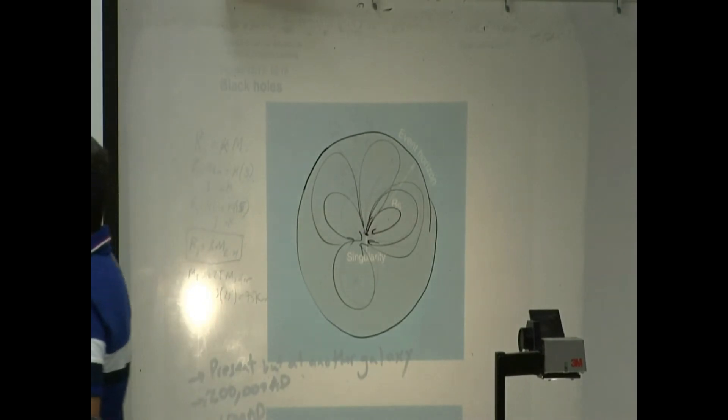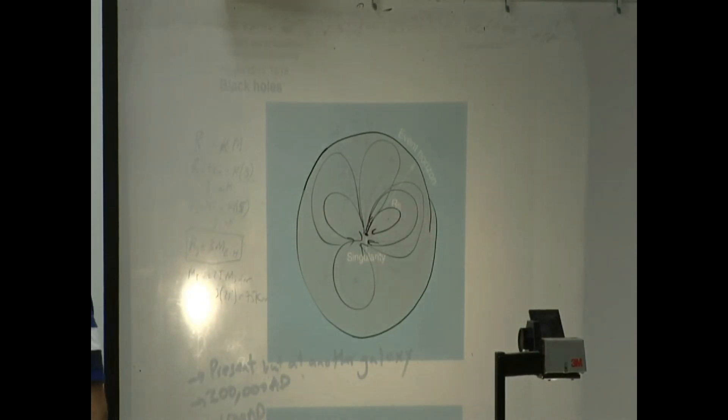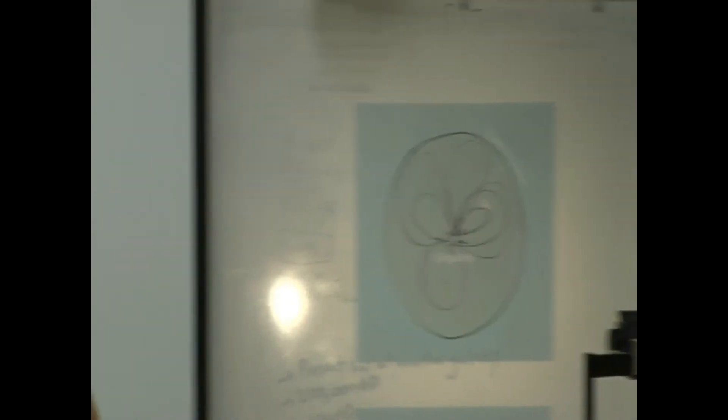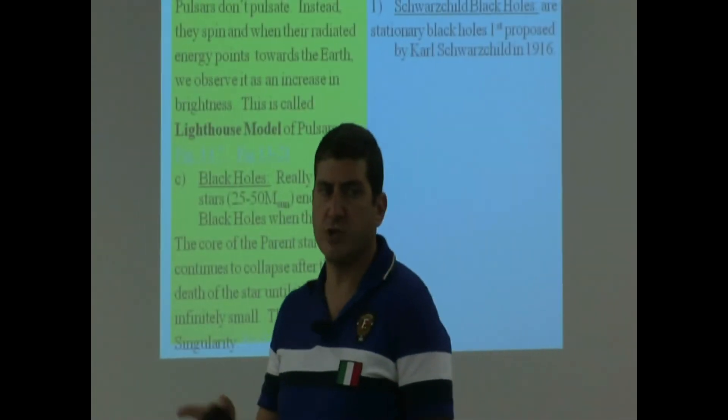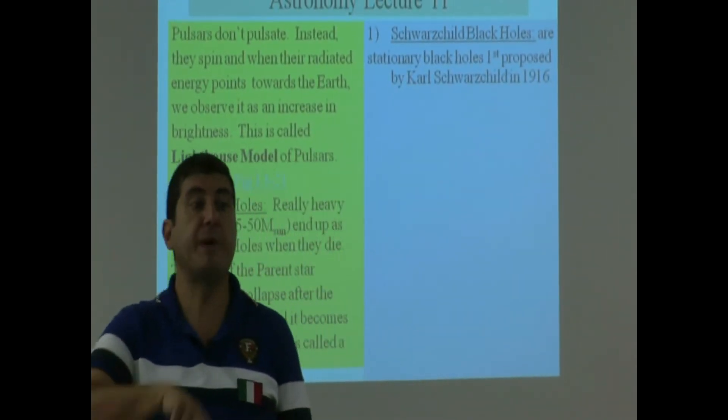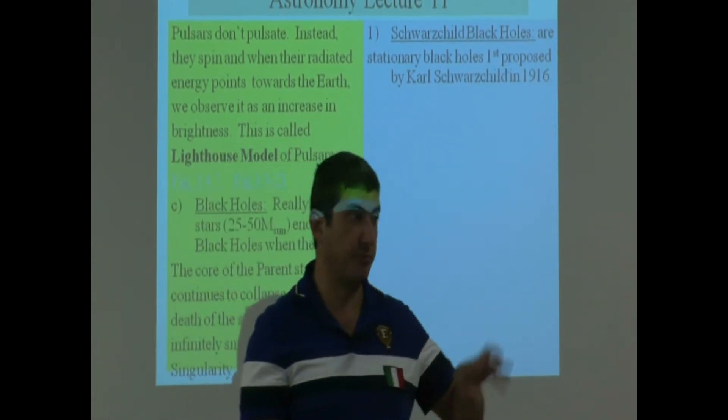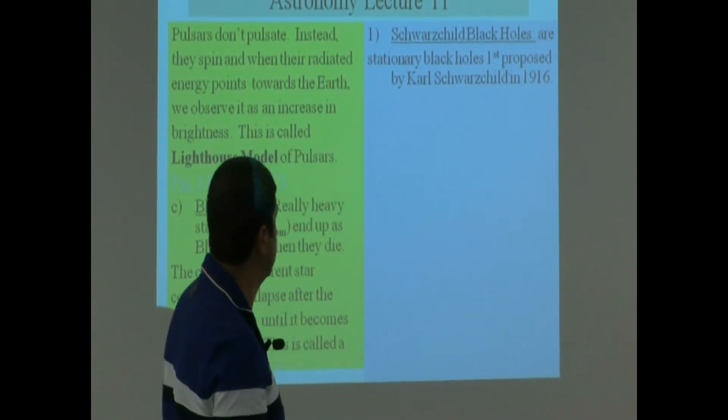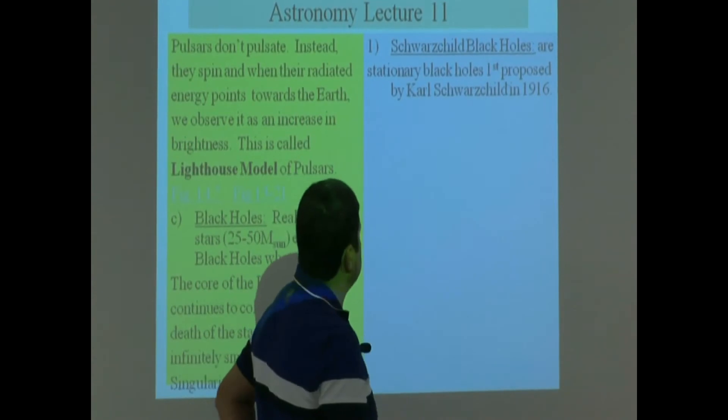It's a non-spinning black hole. So Schwarzschild, this is a black hole predicted by a physicist named Schwarzschild. Based on Einstein's general theory of relativity, he predicted that this kind of black hole should exist in 1916.